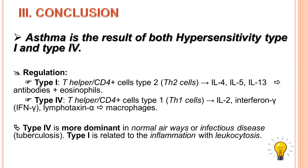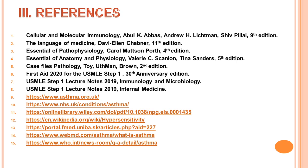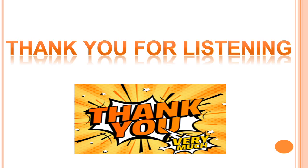Finally, type 4 is more dominant in normal airways or in infectious diseases, for example tuberculosis. But type 1 is related to inflammation with leukocytosis. These are my references. Thank you very much for listening. Cuối cùng, loại 4 chiếm ưu thế hơn và diễn ra thường xuyên hơn ở đường khí bình thường hoặc trong bệnh nhiễm khuẩn như lao. Nhưng loại 1 liên quan đến phản ứng viêm với sự gia tăng bạch cầu.